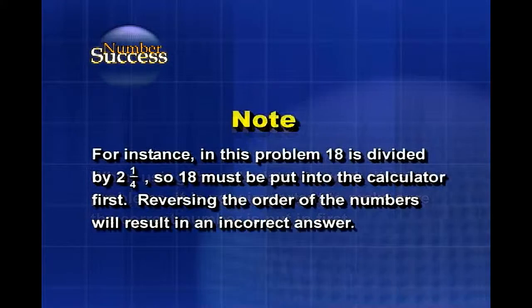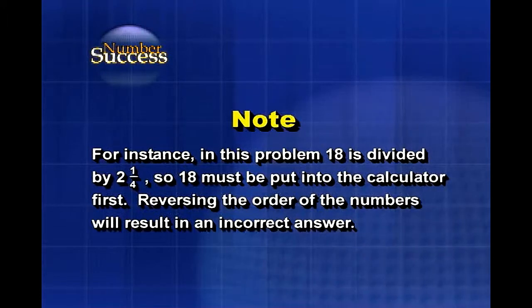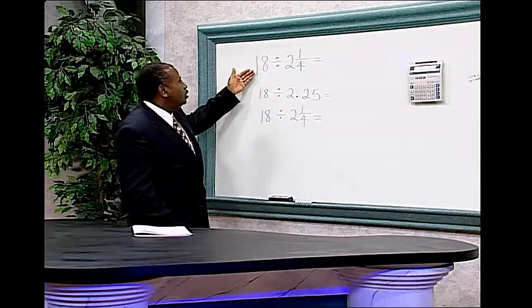For instance, in this problem, 18 is divided by 2 and 1/4, so 18 must be put into the calculator first. Reversing the order of the numbers will result in an incorrect answer. Now we're going to utilize the calculator to solve 18 divided by 2 and 1/4.